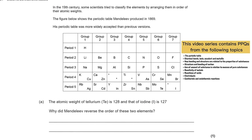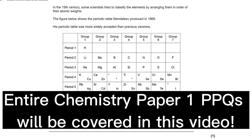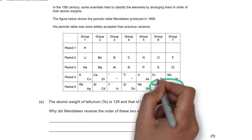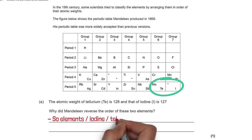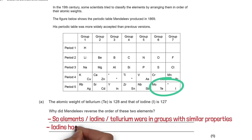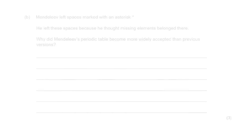The first question gives us the periodic table of Dmitry Mendeleev, produced in 1869. The question asks why did Mendeleev reverse the order of these two elements — tellurium and iodine. These were reversed so that the elements were grouped with similar properties. For example, iodine has similar properties to bromine, chlorine and fluorine.